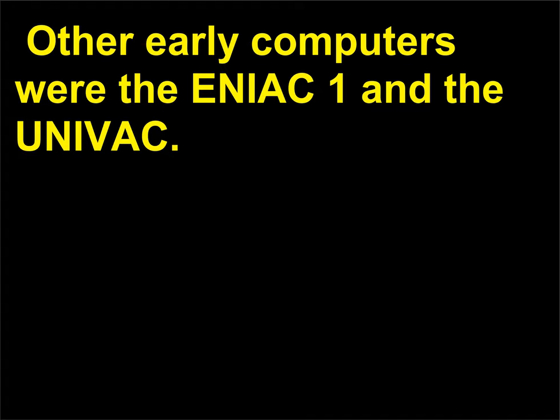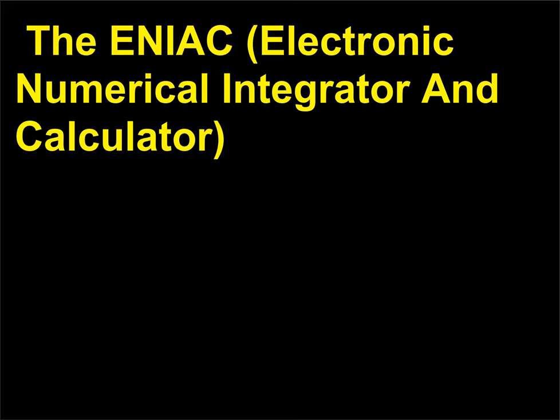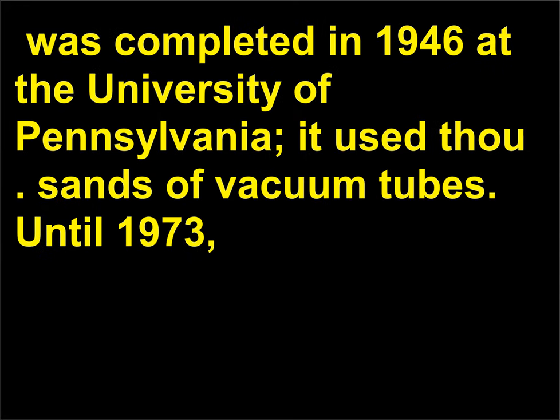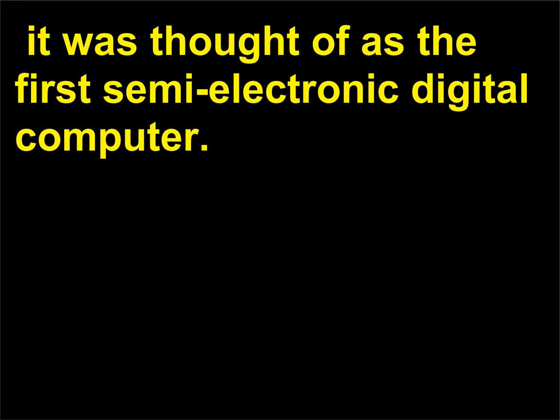Other early computers were the ENIAC and the UNIVAC. The ENIAC (Electronic Numerical Integrator and Calculator) was completed in 1946 at the University of Pennsylvania; it used thousands of vacuum tubes. Until 1973, it was thought of as the first semi-electronic digital computer. That credit was subsequently given to Atanasoff and Berry.